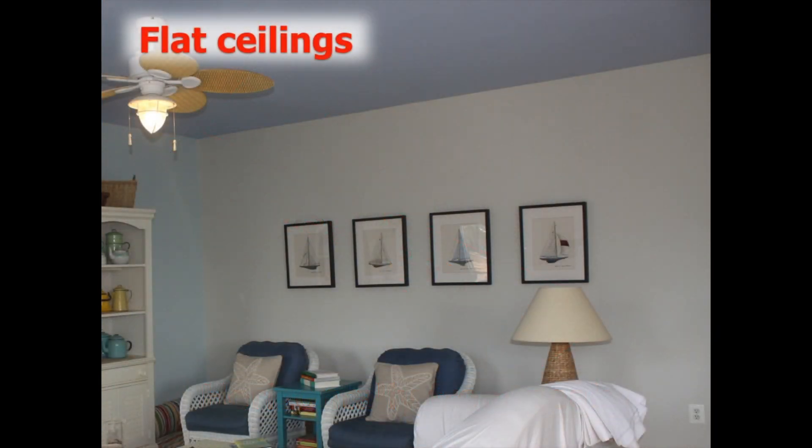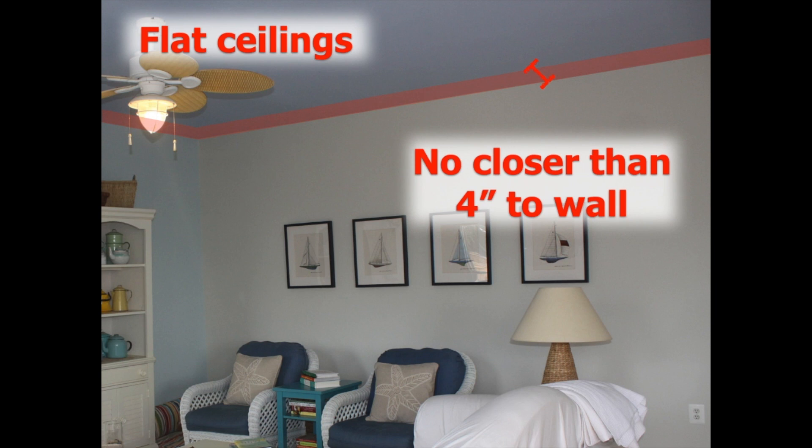For flat ceilings it's a little different. You just want to stay out of the corners. You can't be closer than four inches to the walls on flat ceilings. Otherwise you can install the alarms anywhere else along those flat ceilings.